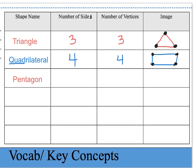The next shape is called a pentagon, and a pentagon has five sides and five vertices. After drawing the five sides, the vertices are labeled with dots. Notice there are five dots — that's where all the lines of the shape meet.